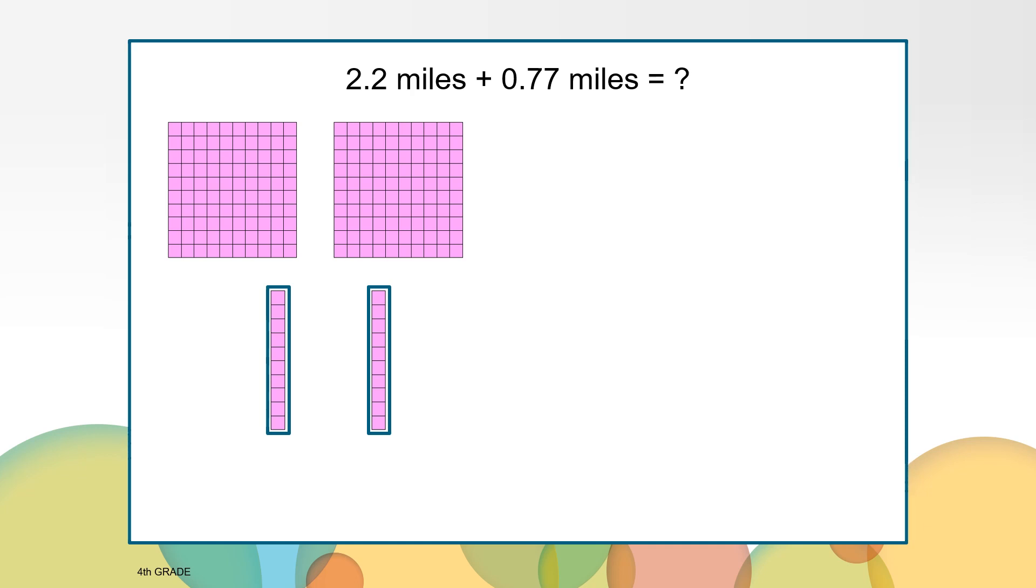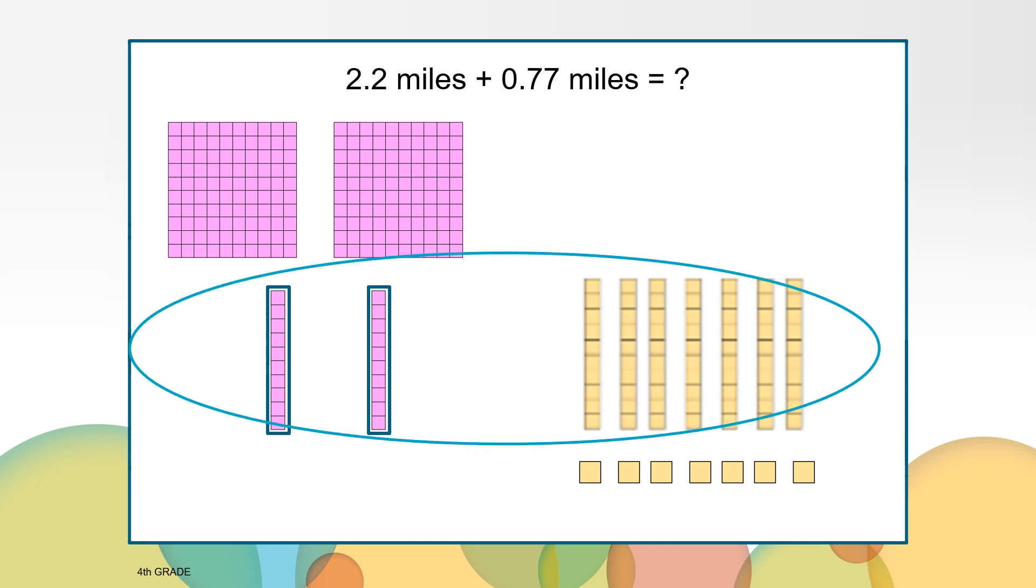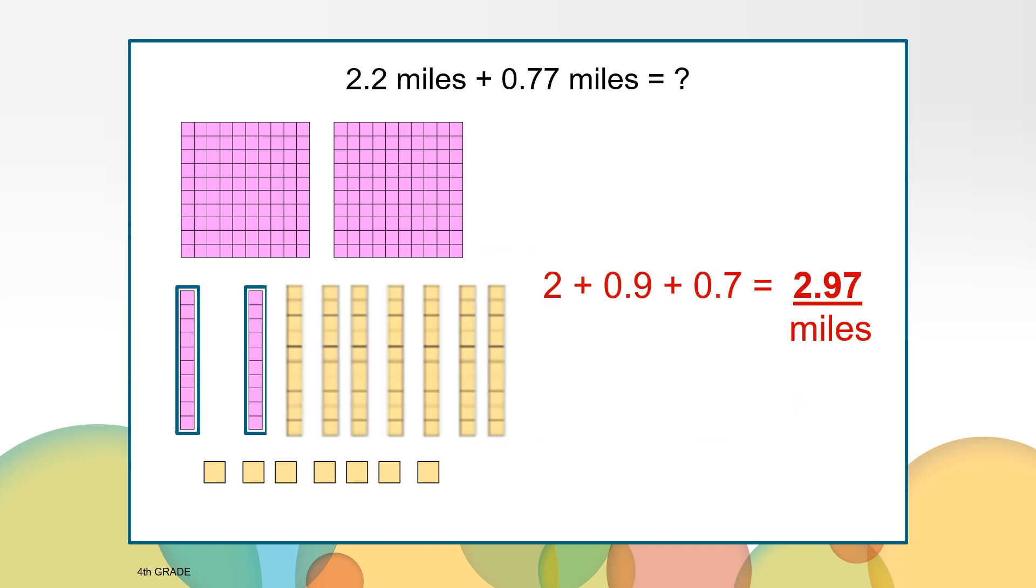Now imagine what 77 hundredths would look like with the blocks. We would have 7 rods to represent the 7 tenths and we would have 7 squares to represent the 7 hundredths. The picture now shows me that I can combine the tenths and have 9 tenths. When I add all the blocks together, I can see the total of 2 and 97 hundredths miles.